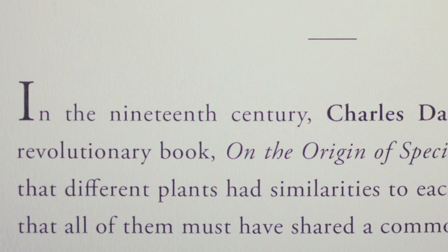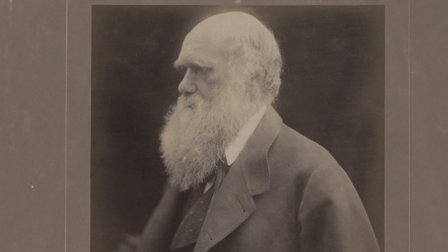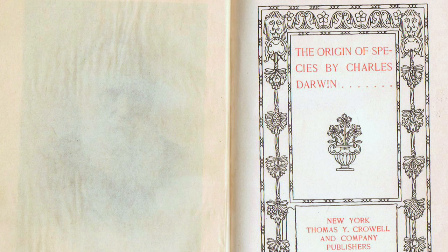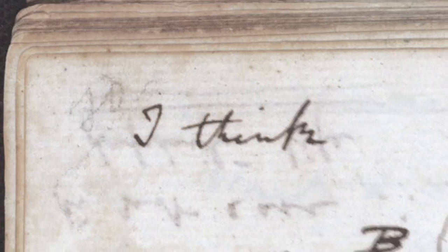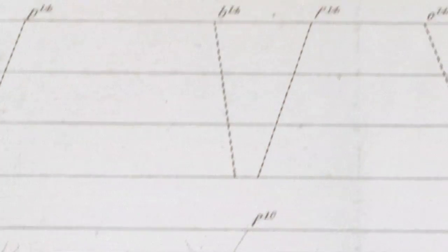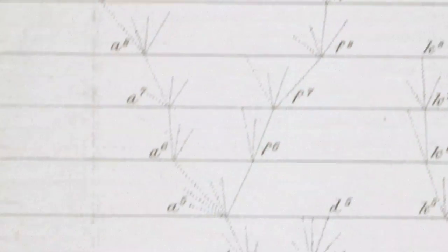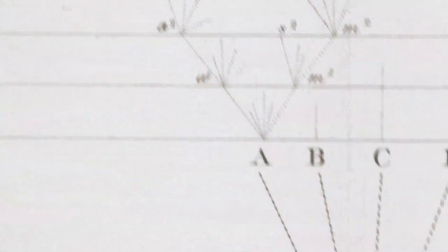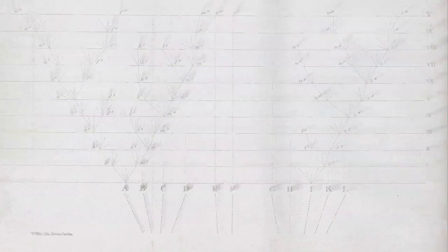In the 19th century, Charles Darwin published his revolutionary book, Origin of Species. It observed that different plants had similarities to each other, and he realized that all of them must have shared a common ancestor.